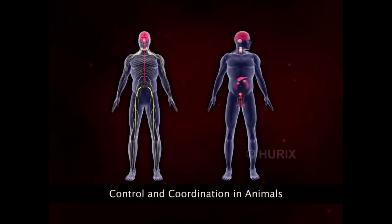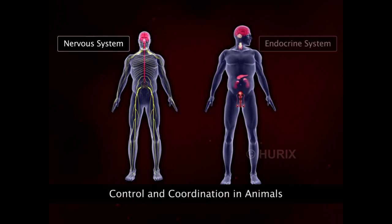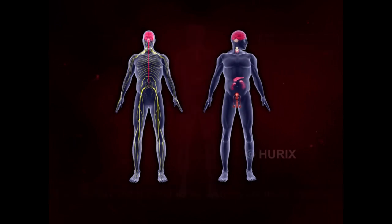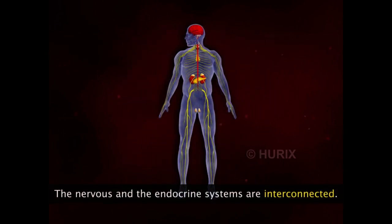Animals have two body systems for control and coordination of all body activities: the nervous system and the endocrine system. These two systems are interconnected to regulate all body processes.